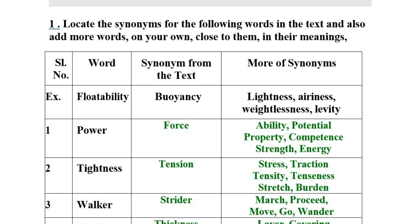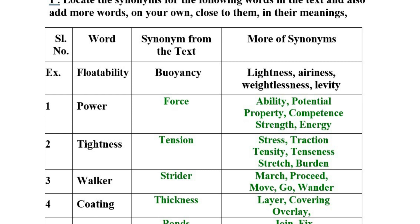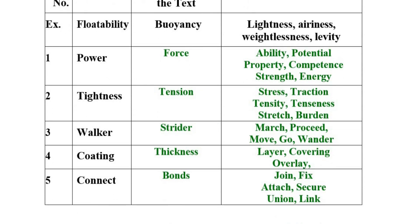The word 'tension' has meanings such as tightness, stress, traction, density, stretch, and burden. The third word is 'walker,' which is also called 'strider,' and its meanings include march, proceed, move, go, and wander.